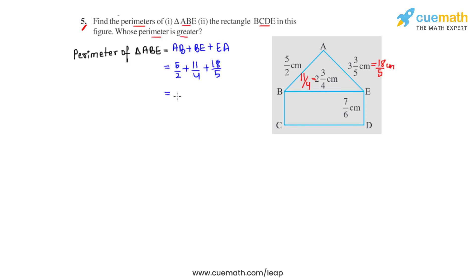These are unlike fractions because all three have different denominators, so we convert them to like fractions. The LCM of 2, 4, and 5 is 20. Multiplying 5/2 by 10/10 gives 50/20. Multiplying 11/4 by 5/5 gives 55/20. Multiplying 18/5 by 4/4 gives 72/20.